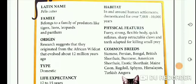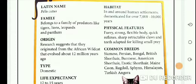So here we have a fact file on cats. The first heading is Latin name, and the Latin name given is Felis Catis. Notice that a complete long sentence is not written, like 'the Latin name of cats is Felis Catis.' No — it's simply Felis Catis, and the reader understands that the Latin name for cats is Felis Catis.